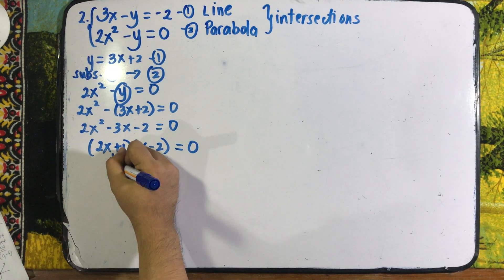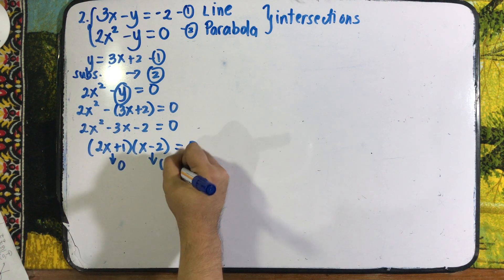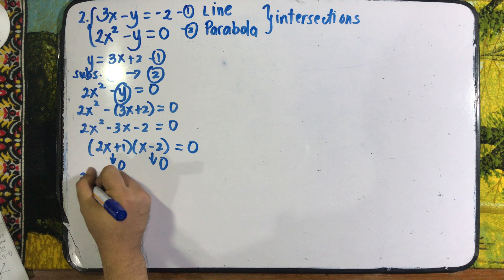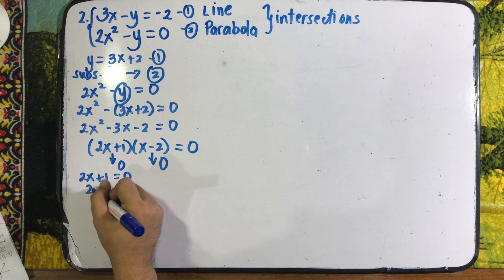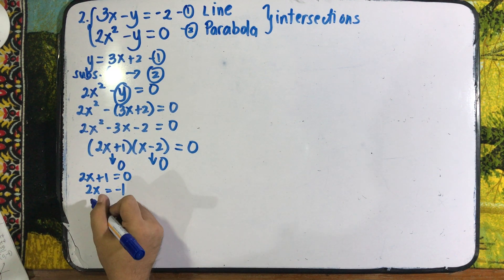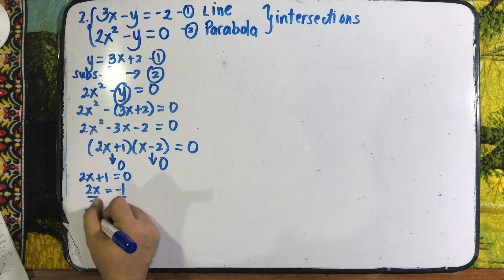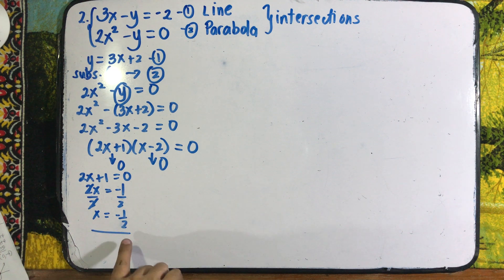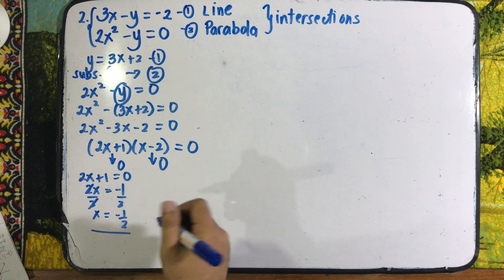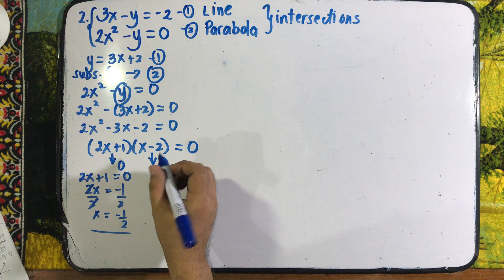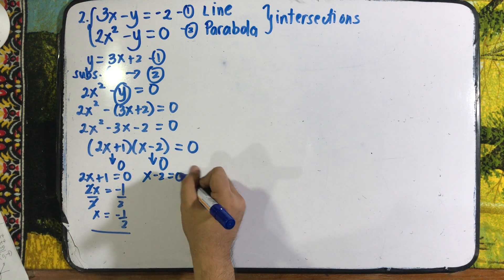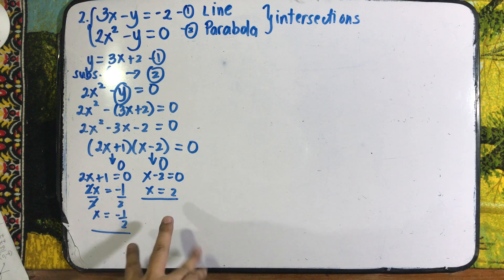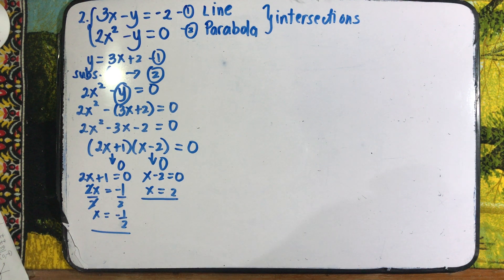Same process — equate each factor to zero. From 2x plus 1 equals 0: 2x equals negative 1, so x equals negative one-half. From x minus 2 equals 0: x equals positive 2. We now have two values of x, meaning we have two intersections.